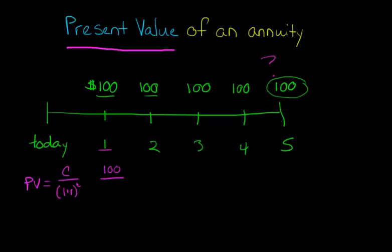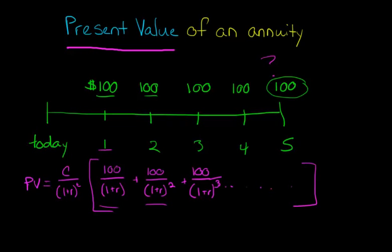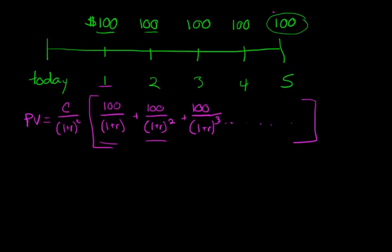But then we would have to add this $100 over 1 plus R squared, and then we would have to calculate and add $100 over 1 plus R cubed, and so forth. So basically what we would have to do the longhand way is we would have to say, for each one of these years, we have to go ahead and treat it as a single cash flow, calculate the present value of that cash flow, and then sum them all together. Now you can see where that would be tedious. So thankfully, there's a much easier way of doing this, and we have a formula for annuities. So we have this annuity, present value of an annuity formula.